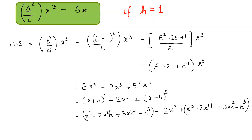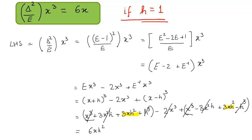Opening up the brackets and taking the cube of these values: x plus h cubed can be written in expanded form, minus 2x cubed, plus x minus h whole cubed in expanded form. Some terms cancel: h cubed and minus h cubed cancel, 3x squared h and minus 3x squared h cancel, and all x cubed terms cancel too. We are left with only two terms of 3xh squared, giving the value 6xh squared. Since h equals 1, this becomes 6x, which is what we had to prove.